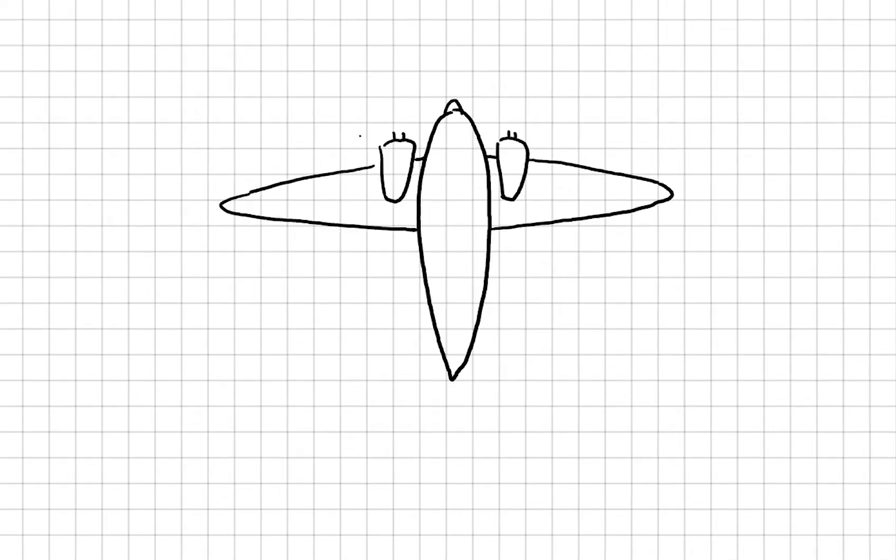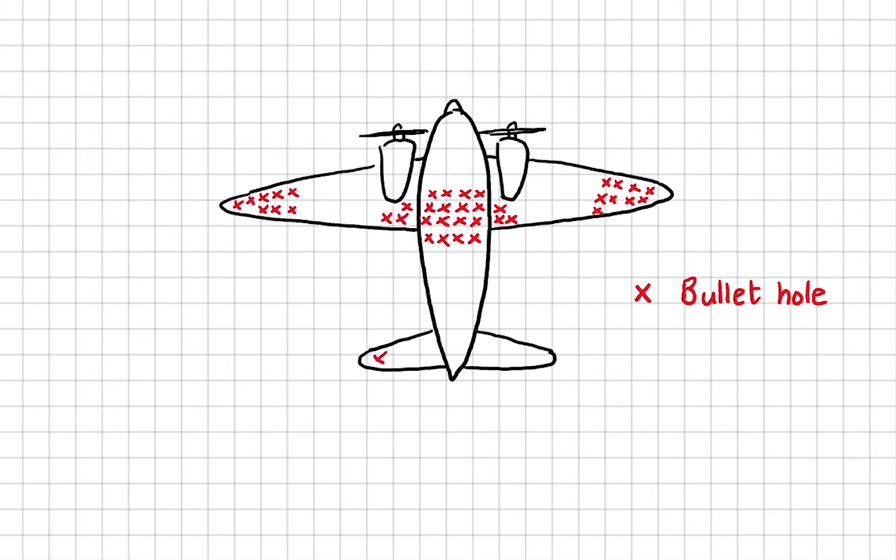When they plotted out the damage that these bomber planes were incurring, they could see that it was concentrated around the fuselage, the wings, and the tail.